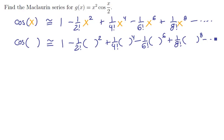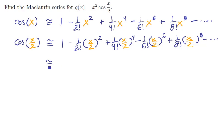Now what we could do is replace whatever is in the blank by anything — say x over 2. If we put x over 2 in all of these spots, essentially replacing x by x over 2, we would have a series for cosine of x over 2. Let's clean it up.